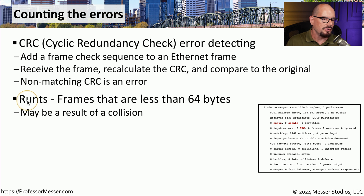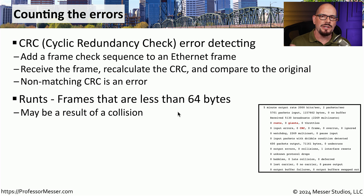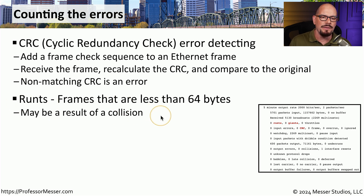If your error counter for runts is increasing, it means that we've received a frame that is less than 64 bytes. 64 bytes is the minimum size of a frame that you should see, so any frame less than 64 bytes would be qualified as an error. We don't often see runts any longer because most of our switch networks are full duplex. But if you happen to be working with a network running at half duplex, you may very well find runts occurring whenever there's a collision.